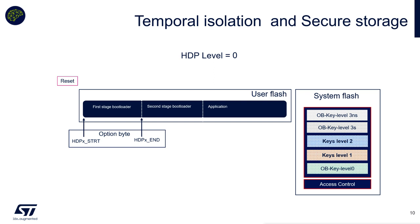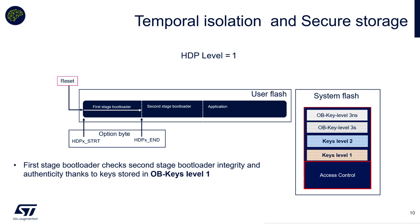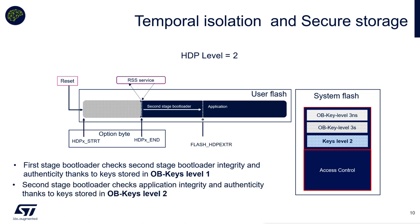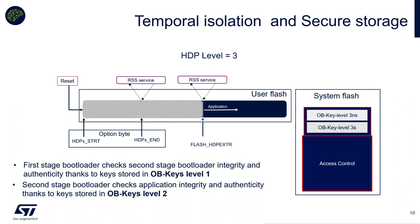Combining Temporal Isolation and Secure Storage: you put the first stage bootloader in the first protected flash portion and the second stage bootloader in the second. You boot at HDP level 1. The first stage bootloader checks the integrity and authenticity of the second stage bootloader using OBKey level 1. Then RSS services are called, HDP level is incremented, and the second stage bootloader checks the integrity and authenticity of the application using OBKey level 2. HDP level is increased again and the application executes at HDP level 3.